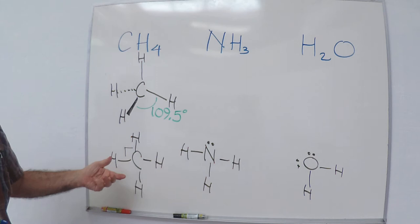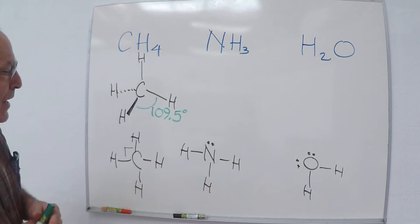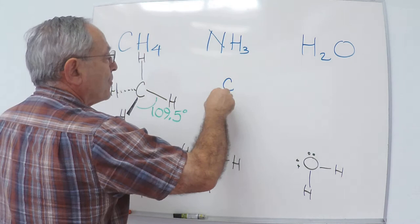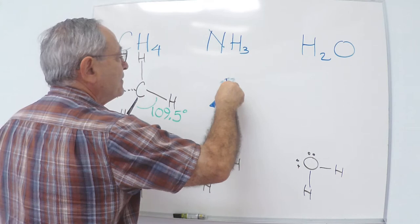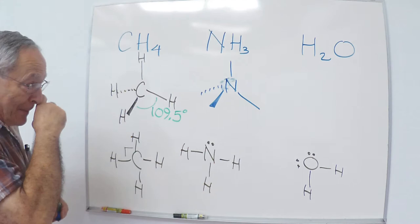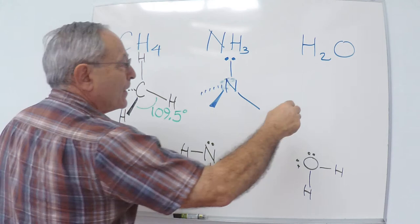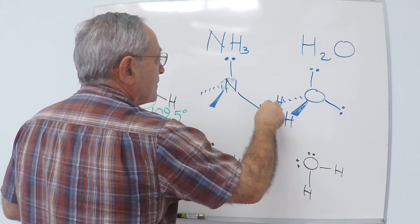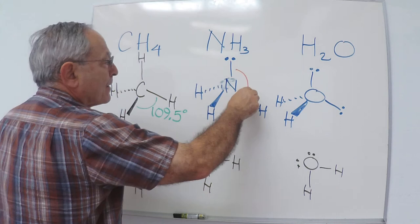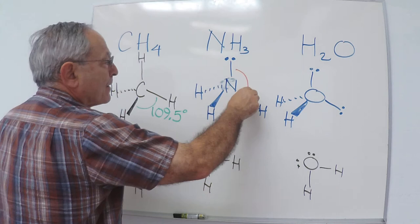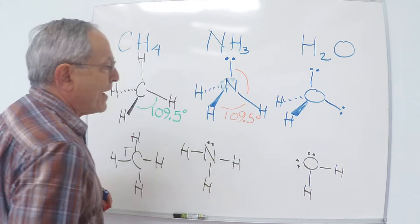The farther apart you put the pairs of electrons, the weaker the repulsions and the lower the energy of the molecule, the more stable the geometric arrangement is. Since each of these central atoms are bonded to four groups, you're going to have the same initial geometric arrangement of the bonds and in this case a lone pair. We'll put our lone pair on a stick, we do the same thing with the oxygen, and now you have two lone pairs. All of these bond angles, first approximation, are 109.5 degrees apart, substantially larger than the 90-degree bond angles.